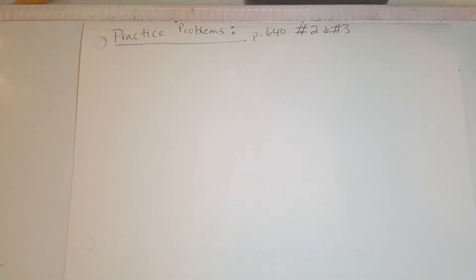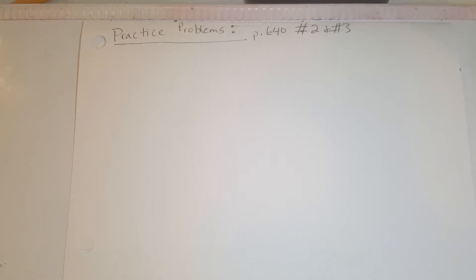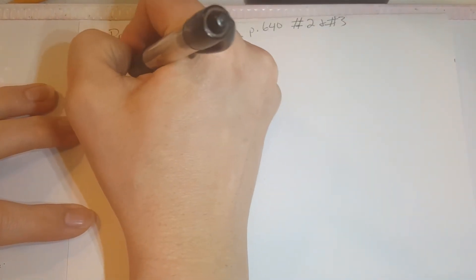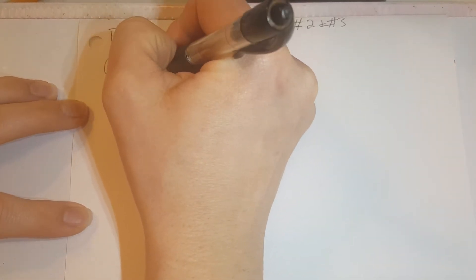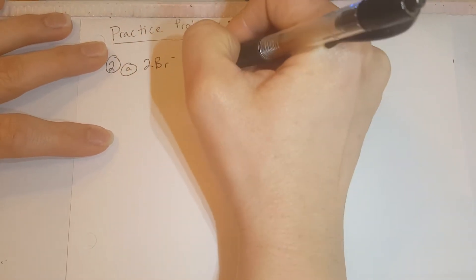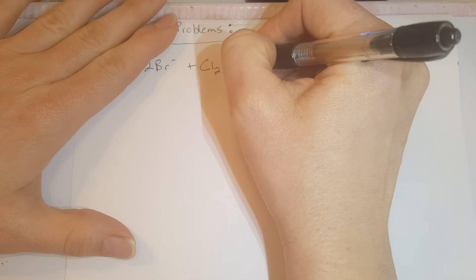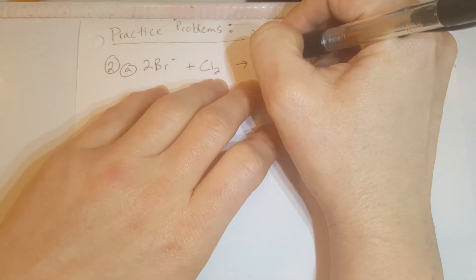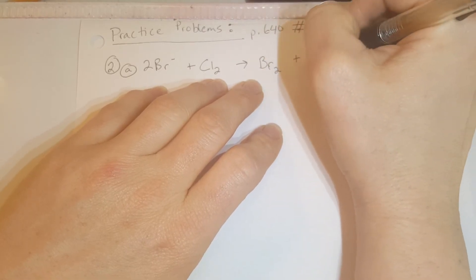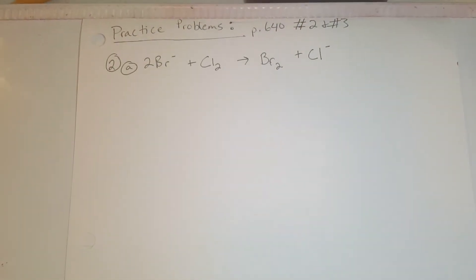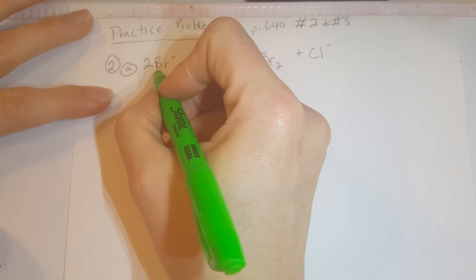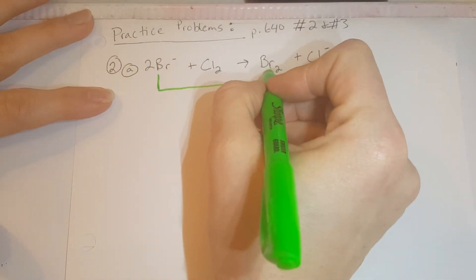Now we're going to do some practice problems. Turn to page 640 and do number two and number three in the yellow practice problems box. Number two says identify what is oxidized and what is reduced. Part A: we have two bromine ions and a diatomic chlorine, and they become a bromine molecule and a chlorine ion. Looking at bromine, it was negative one for each atom and now it's neutral or zero.